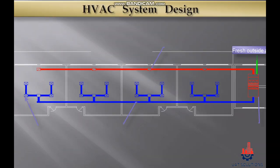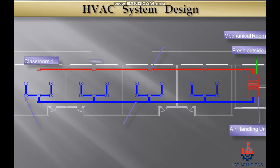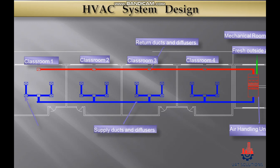We will use the shown example of a school building having four classrooms. In the shown design we have used one air handling unit to serve four rooms. Each room has one VAV box to control the temperature and airflow inside the room, and a return air duct equipped with a damper. Let's start cooling load calculations for the shown example in order to select the equipment size.